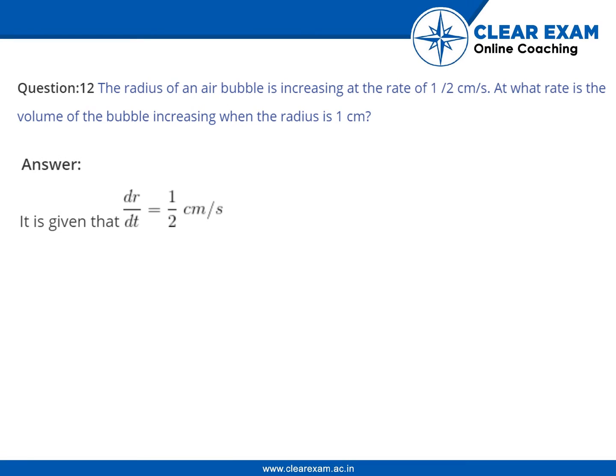The answer is, it is given that dr by dt is equal to 1 by 2 cm per second. So volume V is equal to 4 by 3 pi r cube.